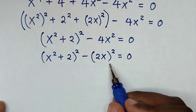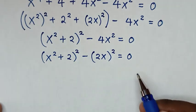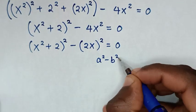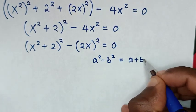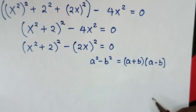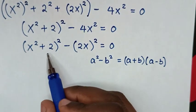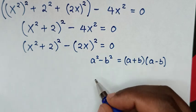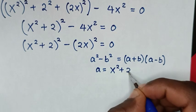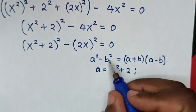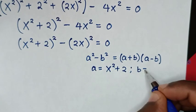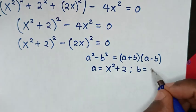Now this is in the form of a difference of perfect squares, so we'll apply the rule: a squared minus b squared equals (a plus b)(a minus b). When we compare a squared with (x squared plus 2) squared, then a equals x squared plus 2. And when we compare b squared with (2x) squared, then b equals 2x.